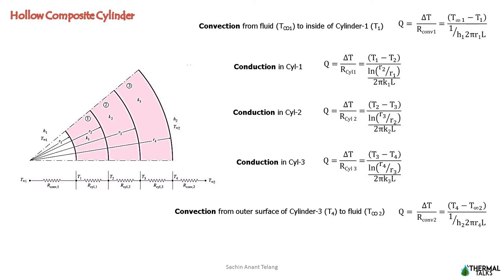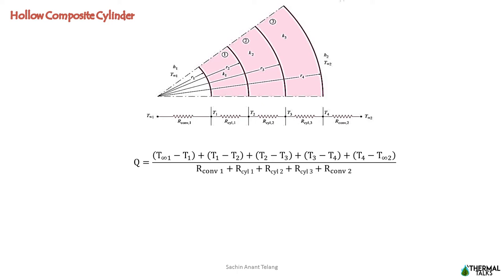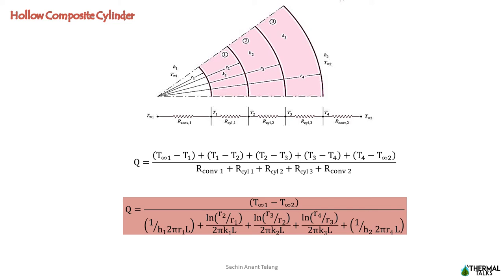It is very important to know the radius values, especially in conductive thermal resistances. Under steady state condition, heat transfer is the same throughout, so we add all temperature terms in the numerator divided by all thermal resistance terms in the denominator. T1, T2, T3, and T4 cancel out, and finally heat transfer in a hollow composite cylinder = (T∞1 - T∞2) / (convective resistance inside + conductive resistance in cylinder 1 + conductive resistance in cylinder 2 + conductive resistance in cylinder 3 + convective resistance at outer surface).